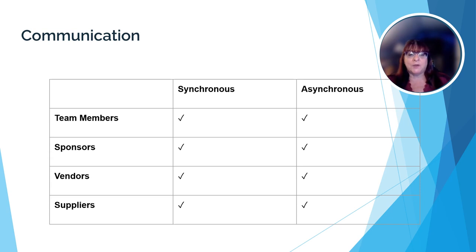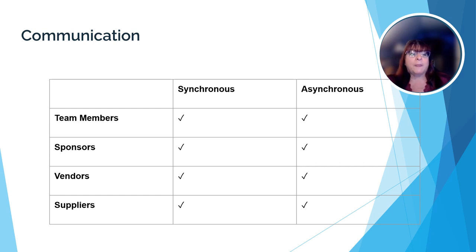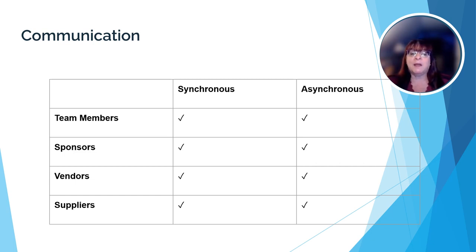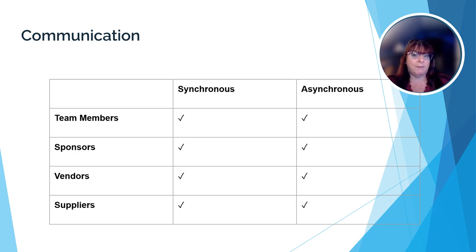For example, the project manager may hold a daily meeting with team members to tell them in real-time the plan for the day. He or she may hold a meeting once a month to go over progress with the sponsors, or they may prefer to receive weekly reports that they can go over at their leisure. Vendors and suppliers are typically communicated with by telephone or email when placing an order for their services or materials, while using email for updates may be sufficient after the initial communication.